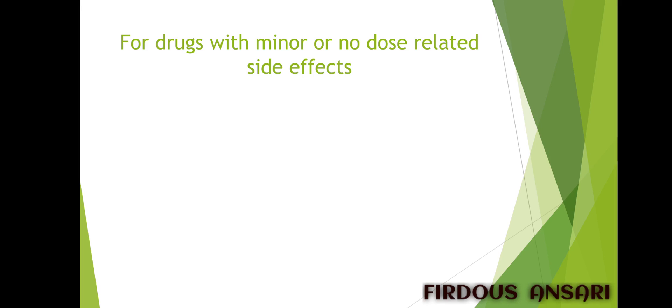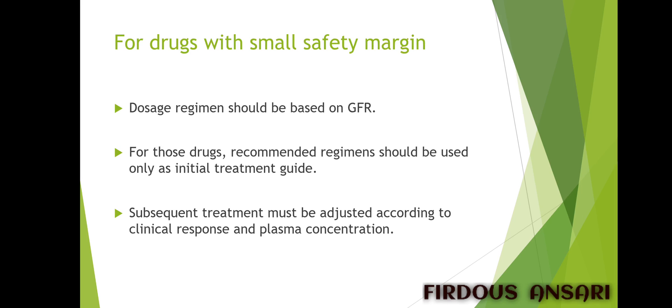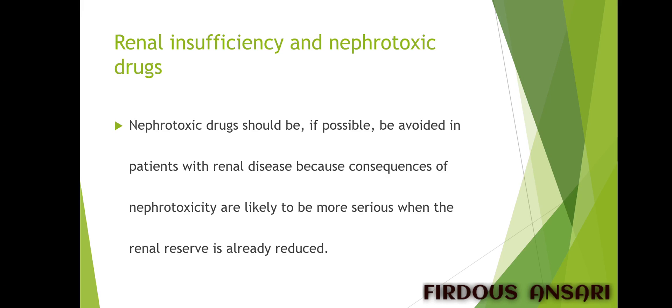For drugs with minor or no dose-related side effects — those with a very wide therapeutic range — very precise modification of the dose regimen is not necessary; a simple dose reduction is sufficient because a little alteration in the dose may not produce side effects. For drugs with small safety margins — those with a very narrow therapeutic range — the dosage regimen should be based on the glomerular filtration rate. Recommended regimens should be used only as an initial treatment guide, and subsequent treatment must be adjusted according to clinical response and plasma concentration.